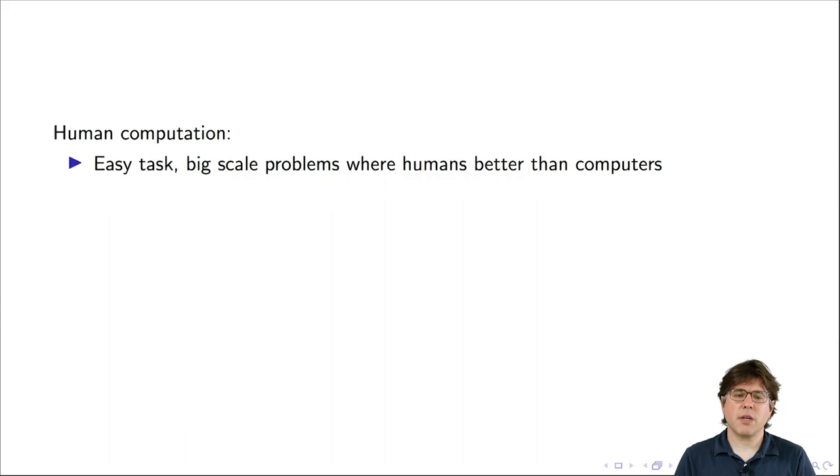Human computation projects are projects where there's an easy task to do, but the difficulty comes from the scale of the problem, and it's also one where humans are better at doing the task than computers. They often employ a split-apply-combine strategy where you take a big task, split it up into lots of pieces. Some work is done on those pieces, and then the results are put back together.